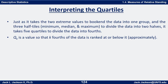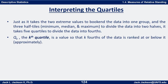If we want to take our data and divide it into fourths, it's going to take five values to do that. Q sub k is called the kth quartile, and it's a value so that k fourths of the data is ranked at or below it, at least approximately.